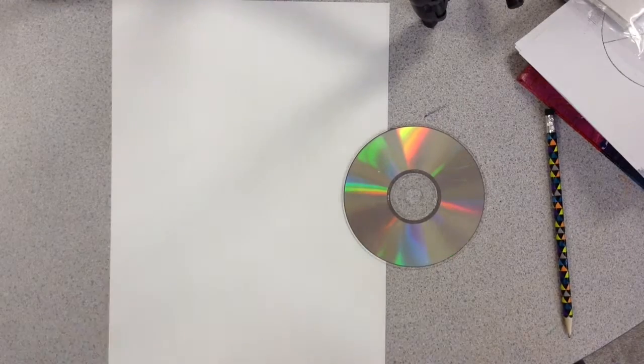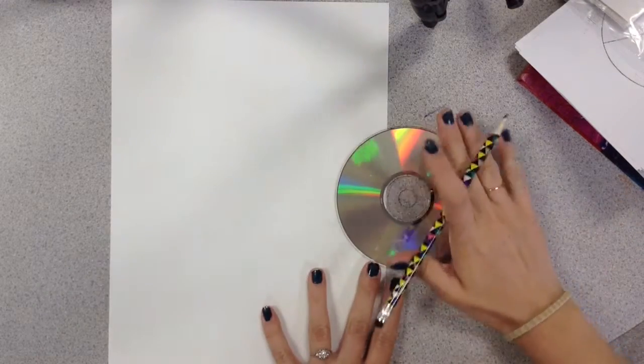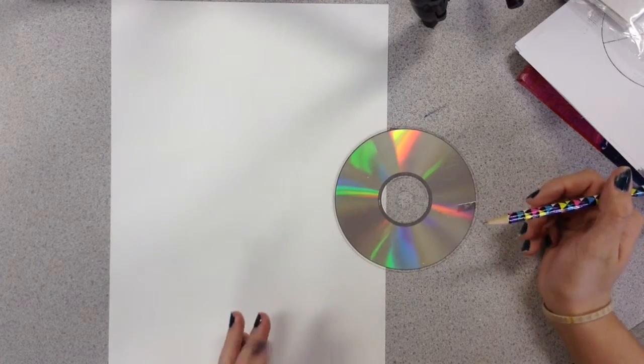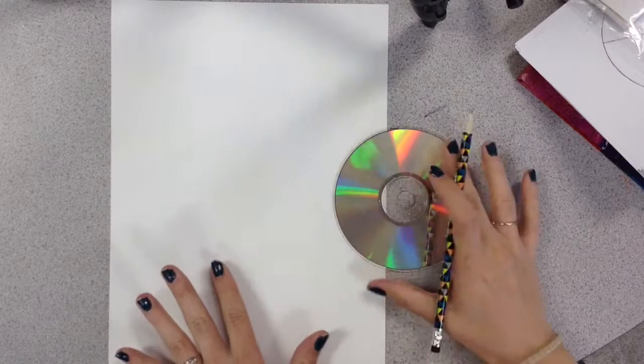To make our picture, we're going to use a CD to trace it to get a nice circle, and we're going to make the umbrella first and then add just the feet of our person onto our picture.